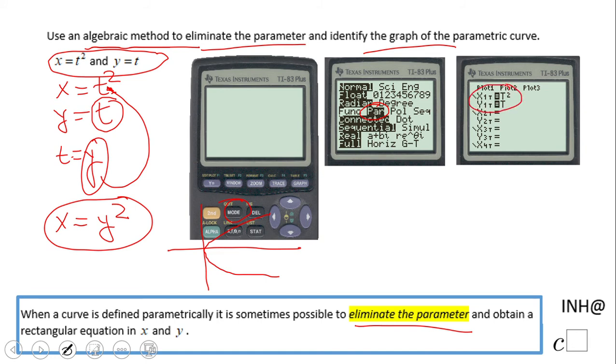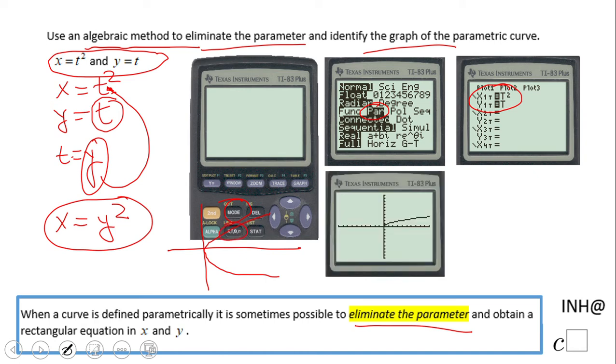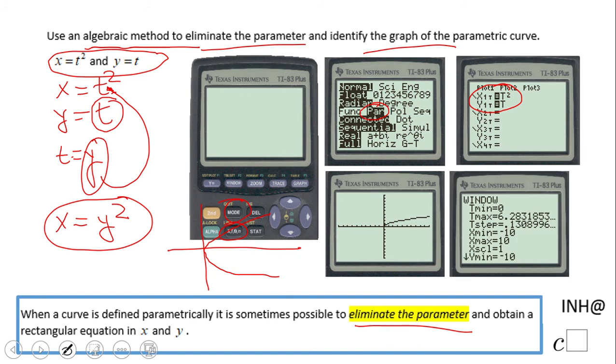Type in the equations using the t variable. You might get half of the parabola. Why? Because your window may be set up to start from zero. T usually stands for time in most problems or temperature, so the calculator is set up to start from zero. To see the whole parabola, you have to adjust that.